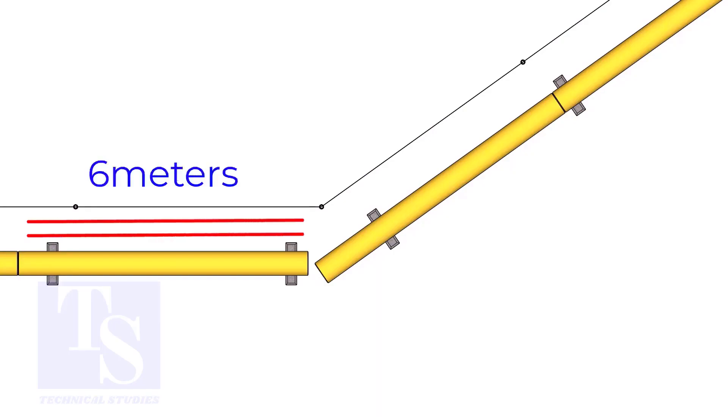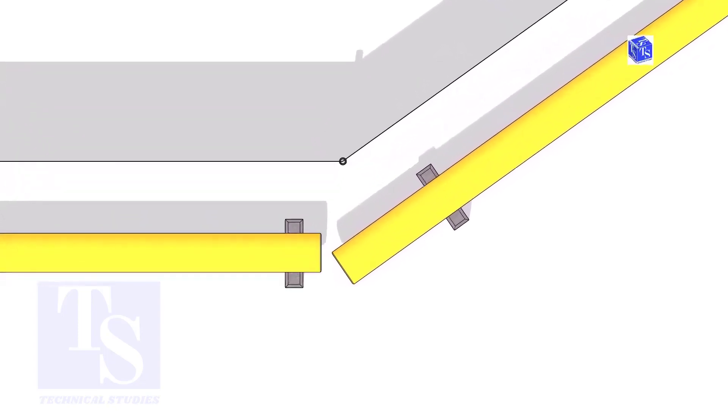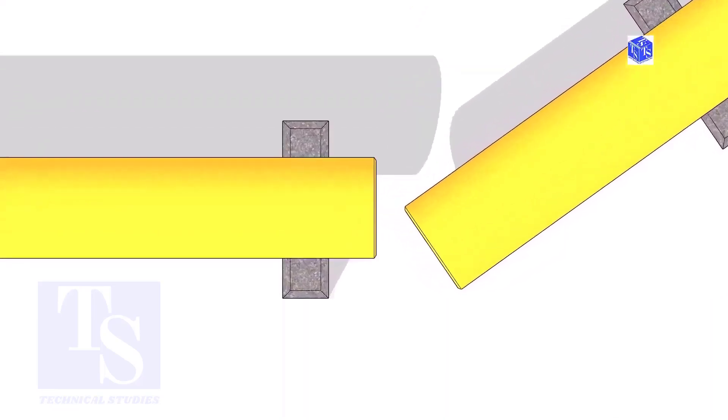The pipe shall be parallel to the fencing, not necessarily the entire length, but at least 6 meters on both sides. Not necessary the center lines of both pipes are in a line.